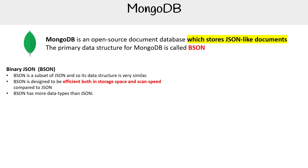BSON has more data types than JSON — it has date times, byte arrays, regular expressions, MD5, binary data, and JavaScript code. JSON is just strings, integers, and arrays — it's very, very simple.